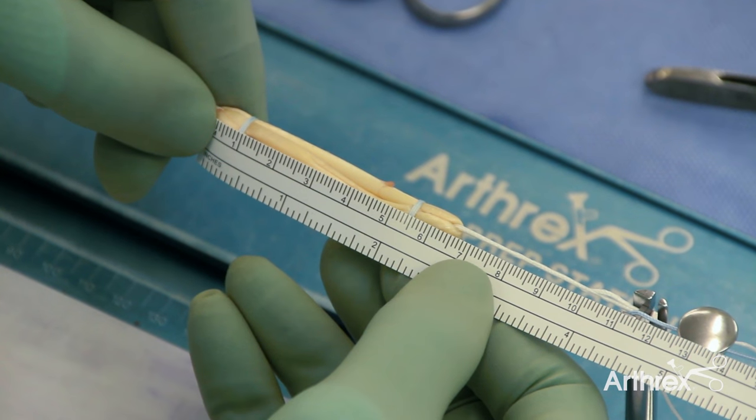So our graft is now prepared, and you can see here it is measuring 68mm, which is very typical and more than adequate for the all inside reconstruction. We have a minimum of 20mm for the femoral and tibial sockets and 25mm for the intra-articular portion.